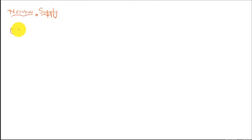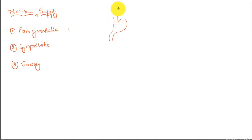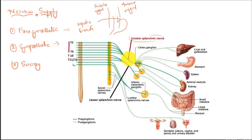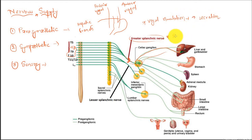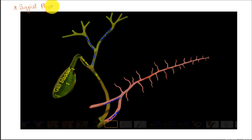Talking about the nervous supply, we have parasympathetic, sympathetic, and sensory nervous supply. The parasympathetic supply is from the vagus nerve — this is the posterior vagal trunk and the anterior vagal trunk, which gives rise to the hepatic branch. The sympathetic supply is through the greater splanchnic nerve via the celiac ganglion to the gallbladder. Sensory supply is through the splanchnic nerve to T7 to T10 in the spinal cord. Vagal stimulation increases bile secretion, whereas splanchnic stimulation decreases bile flow.